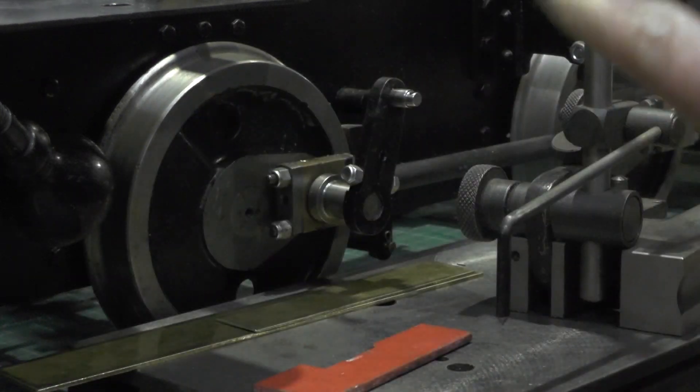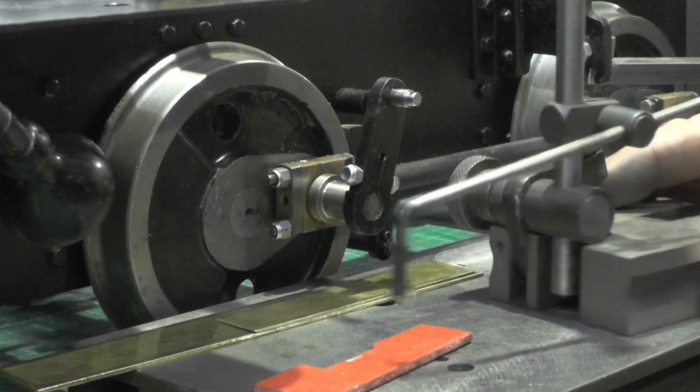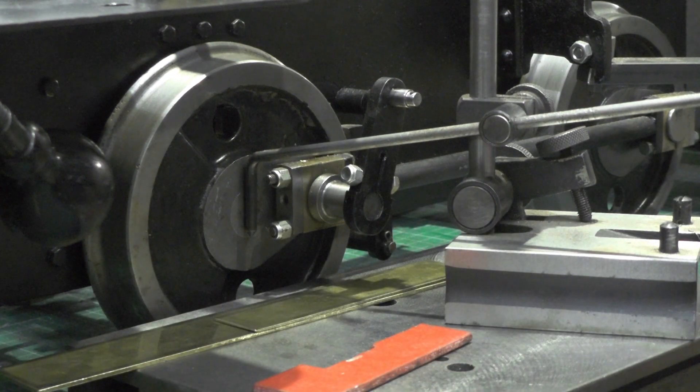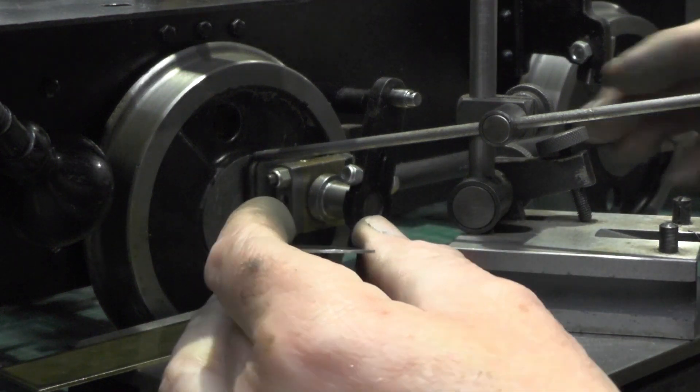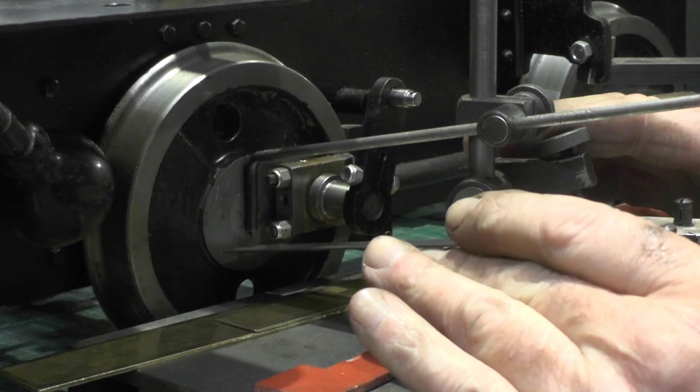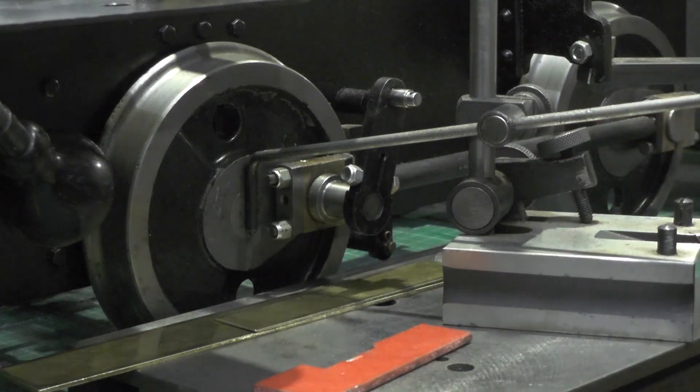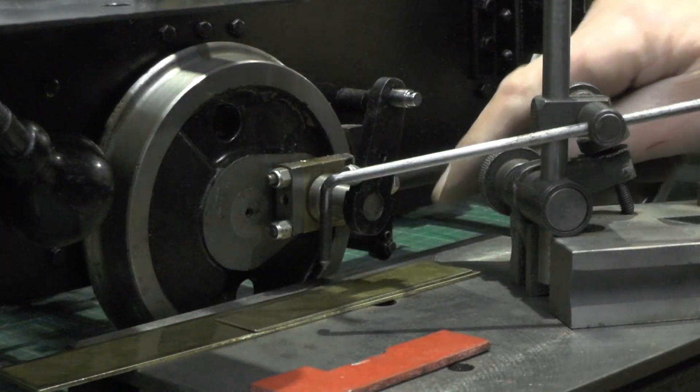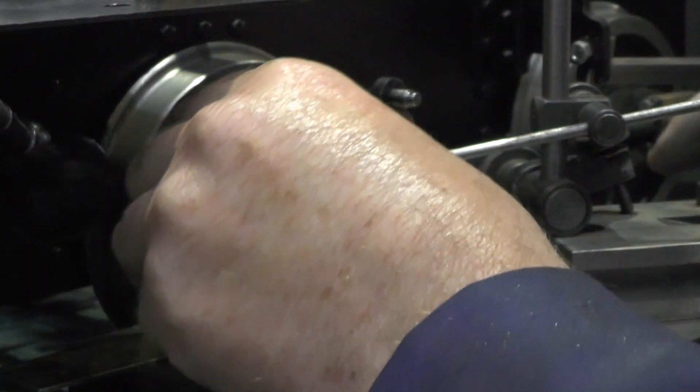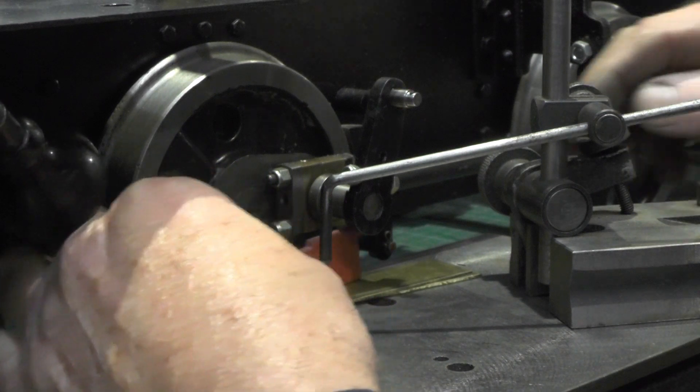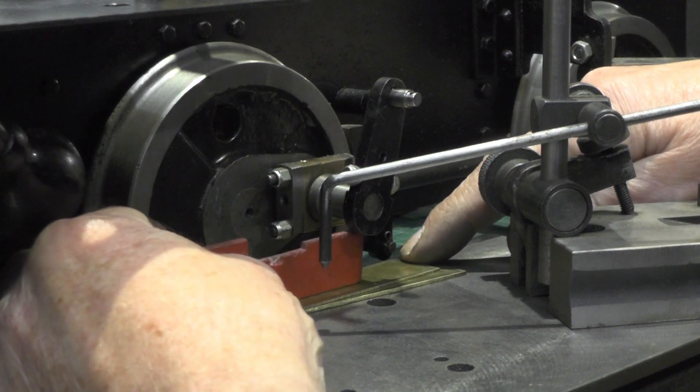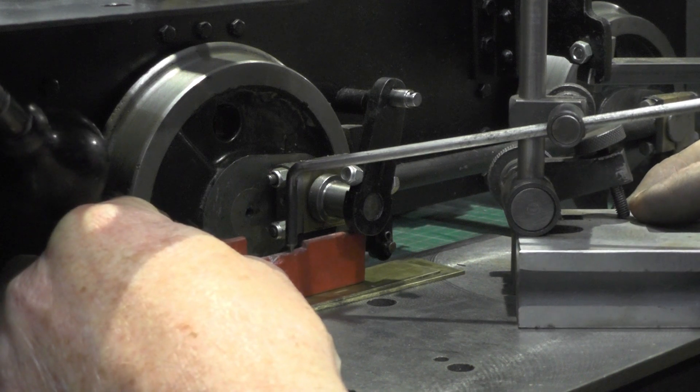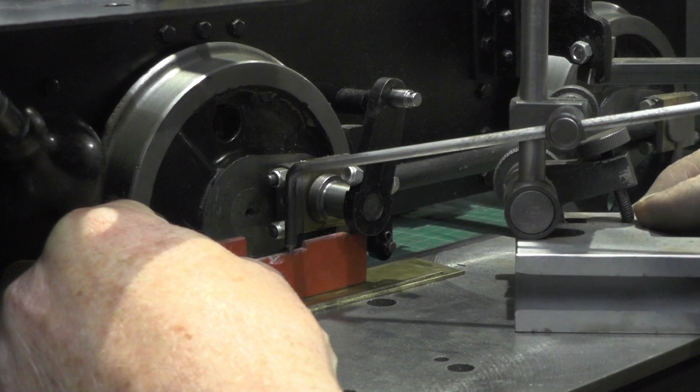So because these wheels are already on, what I've done then, I've set my scribing block to the exact, well within a couple thou anyway, to the exact line where the wheel is at the bottom. So that's where my dummy axle would come. Then using some shimming material, you've got to set your jig to your scribing block on the middle portion where it would rest on the axle.